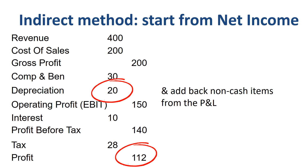You deduct the depreciation as an expense in order to report the correct amount of EBIT and profit before tax, and calculate the correct amount of corporate income taxes. For cash flow purposes, you will have to add back that same amount of depreciation. If you review the annual report of a listed company, you could come across other non-cash items to adjust for, such as stock-based compensation.